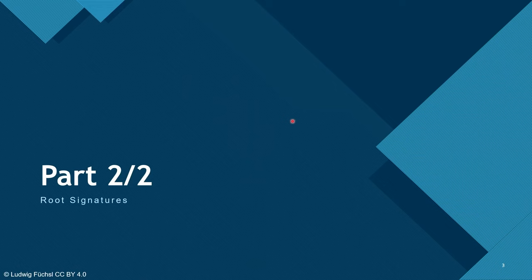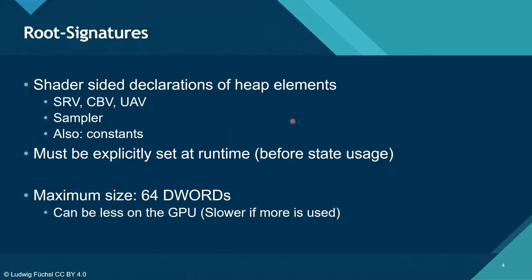Root signatures are the shader-side declaration of heap elements, or used in combination with it. You can declare everything a shader would need: a shader resource view, a constant buffer view, an unordered access view, samplers, and also constants — values baked directly into the root signature as raw data, for example a 32-bit float. The root signature can be interpreted as a memory pointer to a descriptor or to the heap, or as raw constant data.